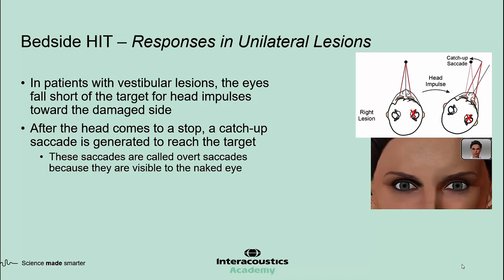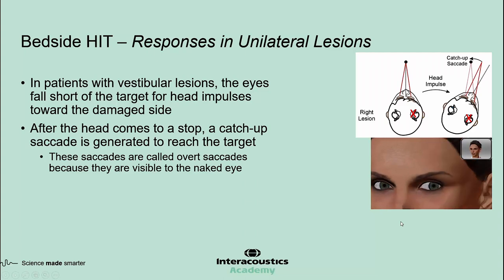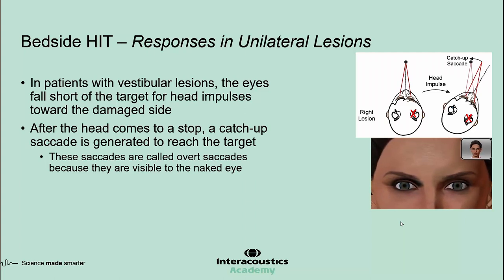In patients with a unilateral vestibular lesion, when the head is moved toward the damaged side, the eyes fall short of the target. As a consequence, the patient must make quick saccades to return the eyes back to the target. The saccades that occur after the head comes to a stop are called overt saccades because they are visible to the naked eye. Here is an example: when the head is moved to the right, the eyes fall short and the patient makes a saccade visible to the naked eye.